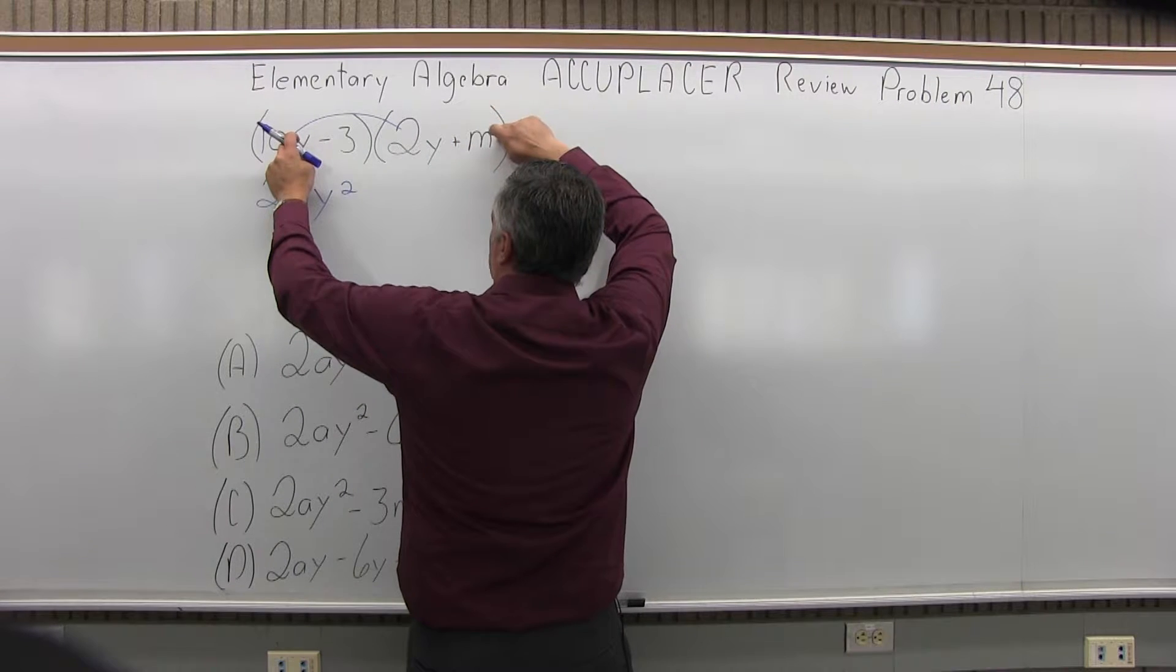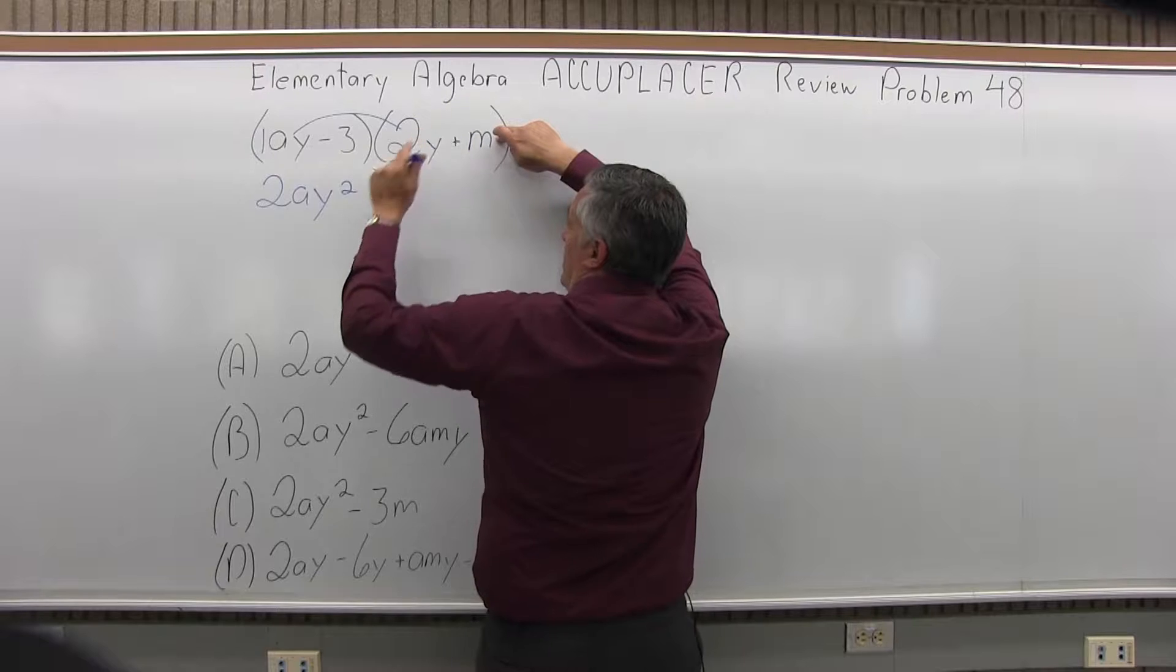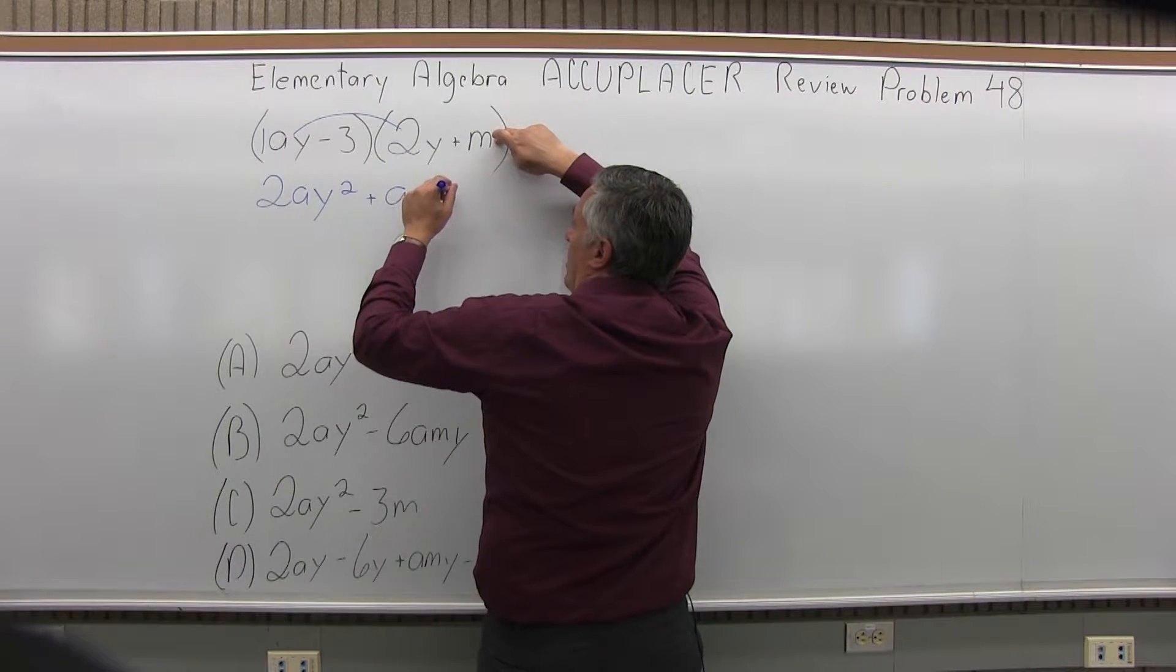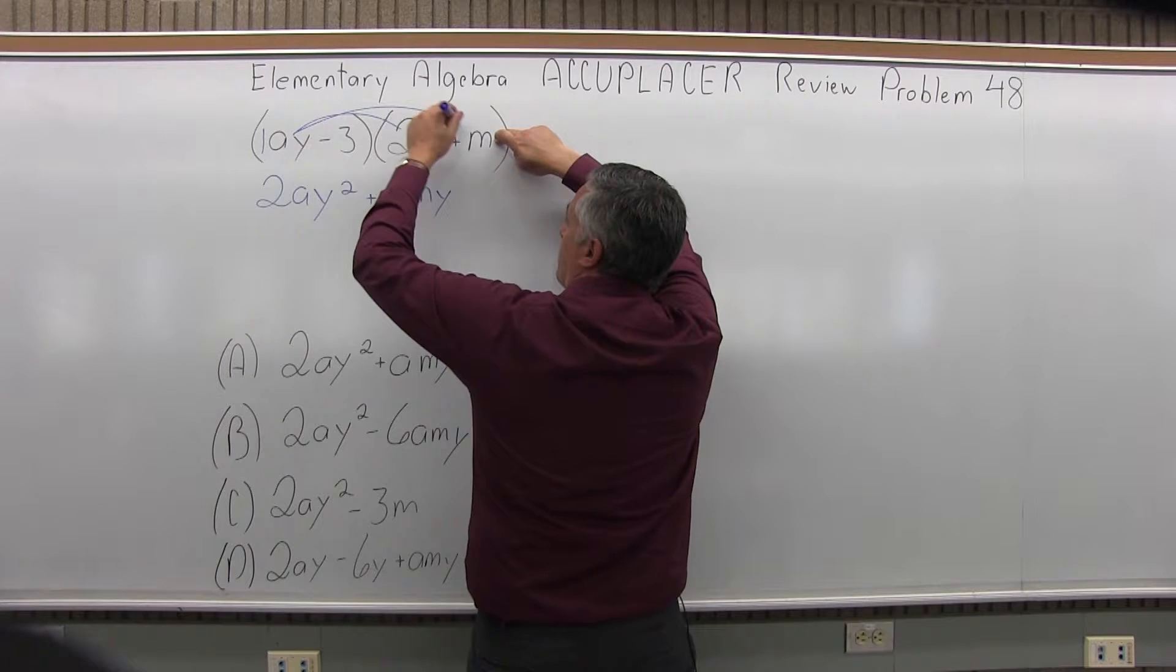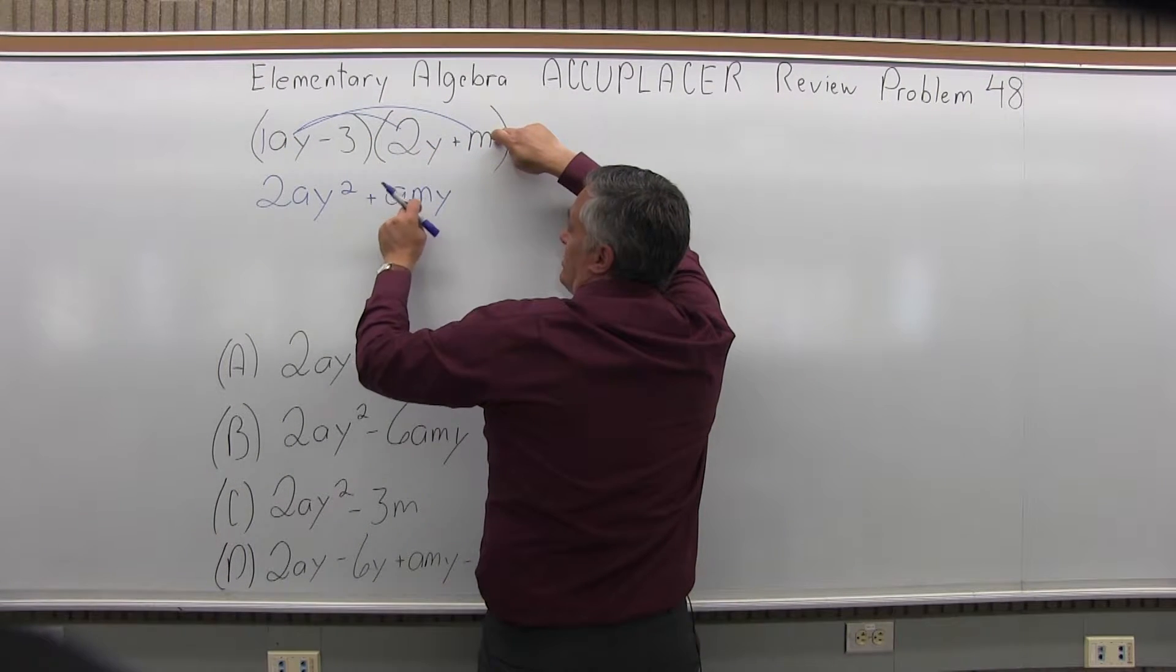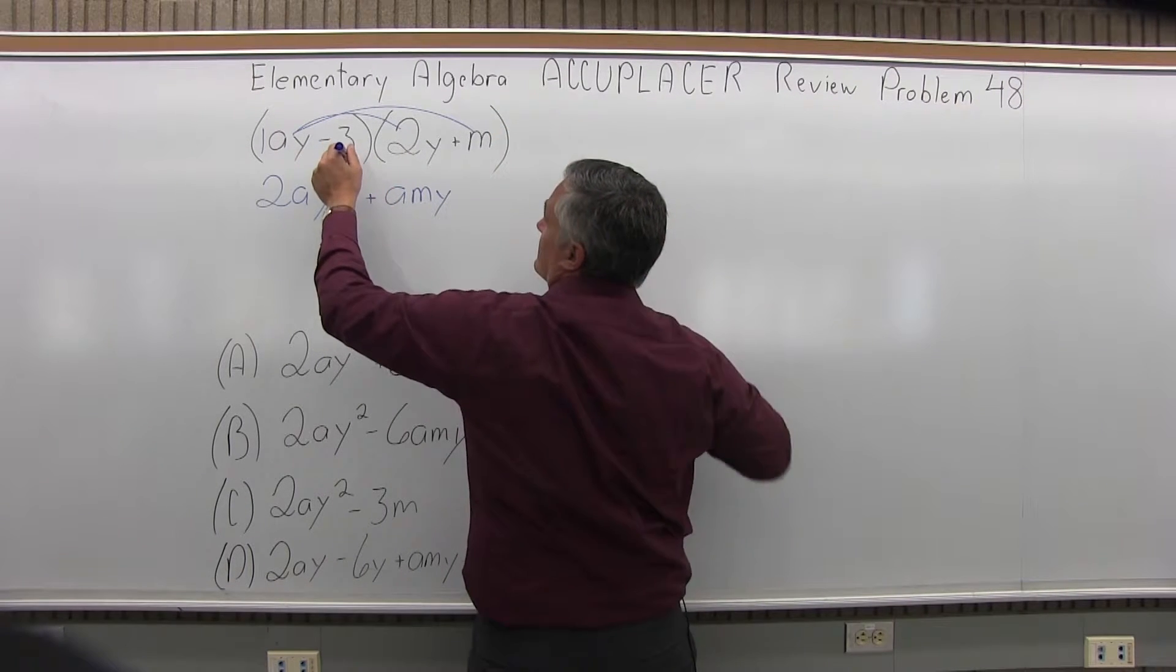Next AY times M. It's a positive times a positive, so I'll plus A, M, Y. That's AY times M. Again, conventionally you put them in alphabetical order, A first, then M, then Y.